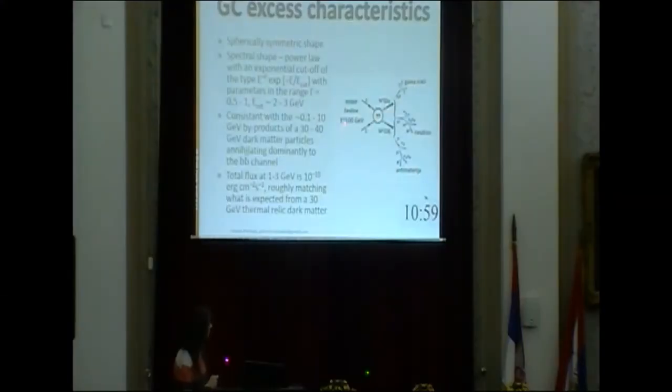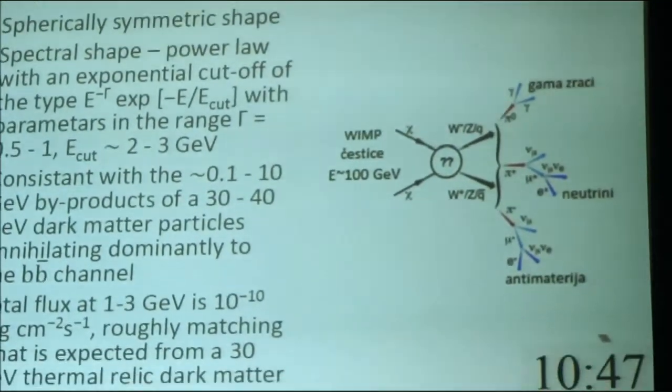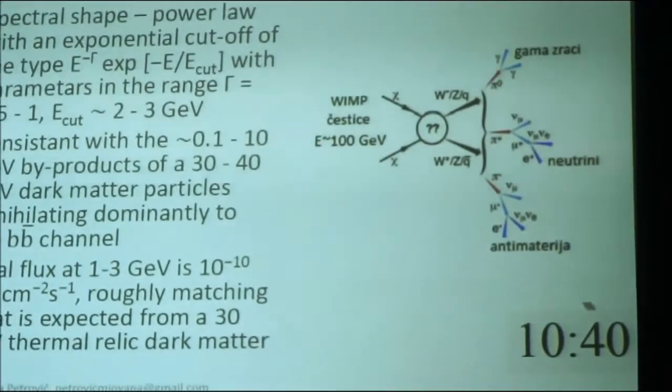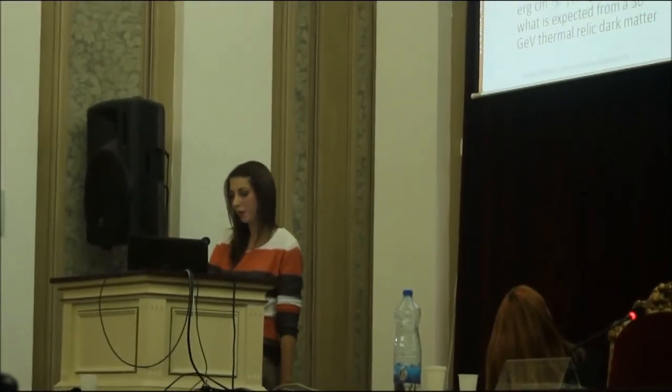In this diagram you can see how dark matter annihilates. These particles represent the weakly interacting massive particles — the most popular candidate for dark matter. One part of these should go into gamma rays, which should be seen. The galactic center is dominant when searching for dark matter because dark matter should be very dense in this region. The total flux calculated from the data, which peaks at 1 to 3 GeV, is 10 to the minus 10 ergs per centimetre squared per second, consistent with what we expect from 30 GeV thermal relics of dark matter. All these results are very intriguing for anybody who looks for dark matter through indirect searches.